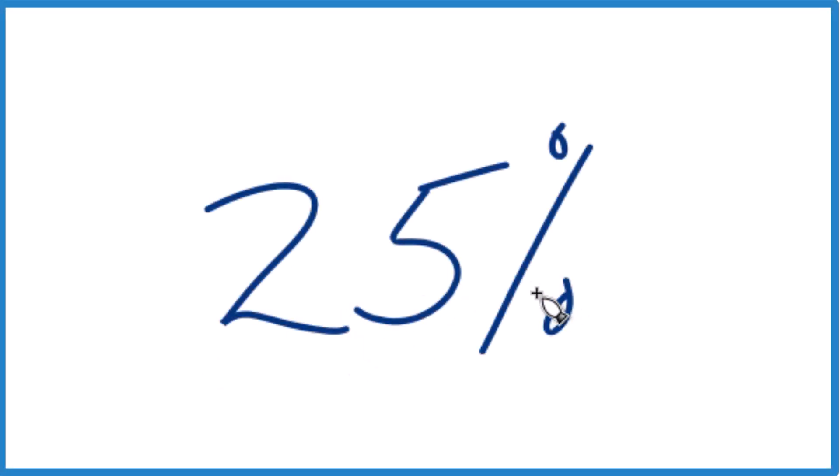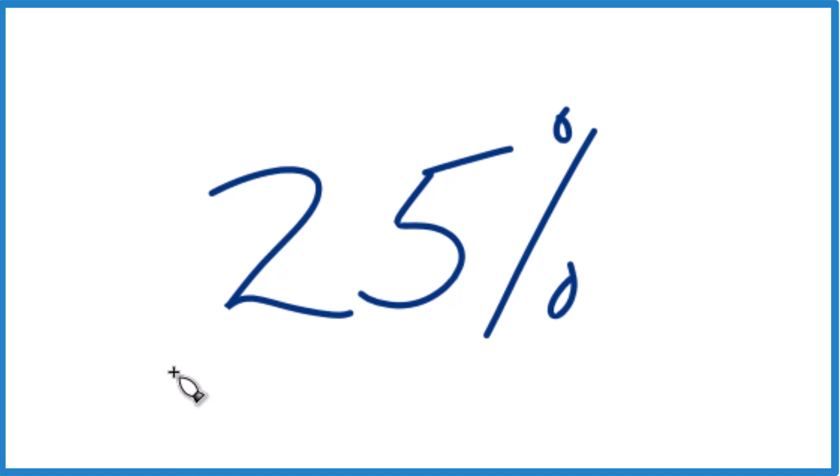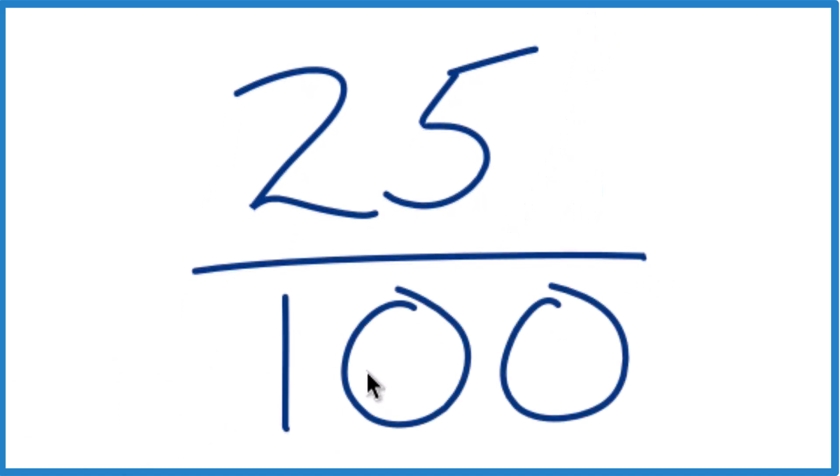So here's how you change 25% to a fraction and a decimal. The first thing to understand is the percent sign right here. That means per 100 or over 100. And now we have a fraction.